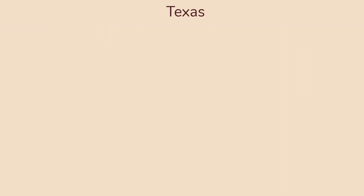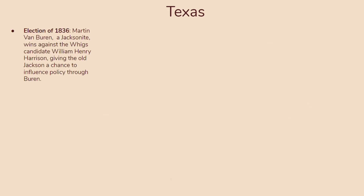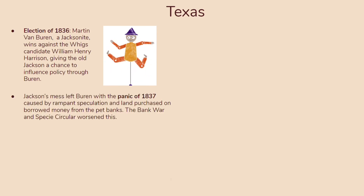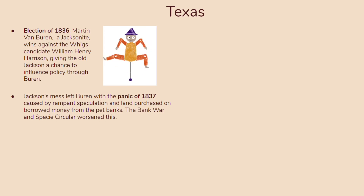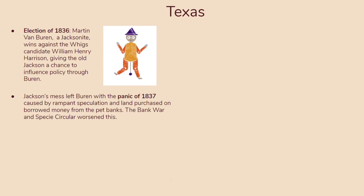Before we talk about Texas, let's discuss the election of 1836. Martin Van Buren, a Jacksonite, won against the Whigs — specifically their candidate William Henry Harrison — giving Andrew Jackson a chance to influence policy through Van Buren, who essentially served as a puppet for Jackson. Unfortunately for Van Buren, Jackson's mess left him with the Panic of 1837, caused by rampant speculation and land purchased on borrowed money from the pet banks. The bank war and Specie Circular only worsened this. Van Buren's presidency is really only significant in its association with Jackson.